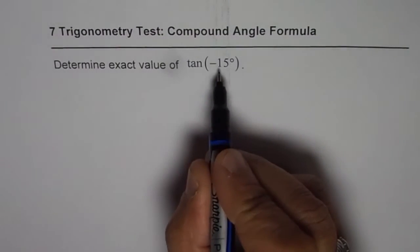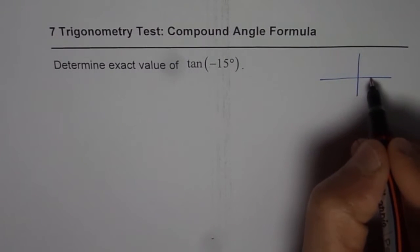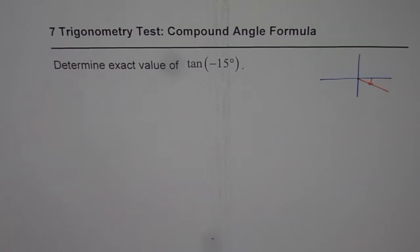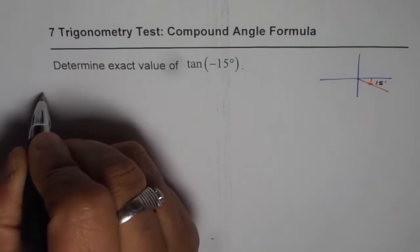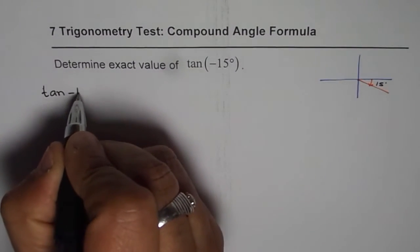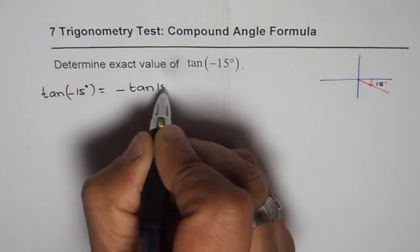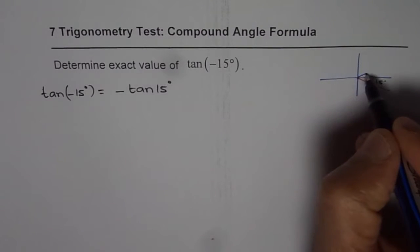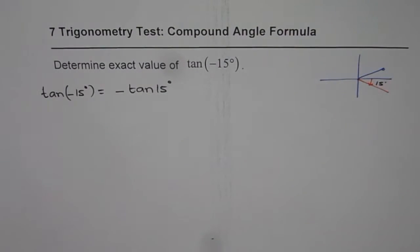Now when we say tan of minus 15 degrees, we mean that the angle is like this — minus means clockwise — so you are in quadrant 4. This is a 15-degree acute angle. So we can write tan of minus 15 degrees as equal to minus tan 15 degrees, since when you are in quadrant 4, tan is negative. So if you compare with its related acute angle, tan 15 degrees, we have to do negative of that. That is one way.